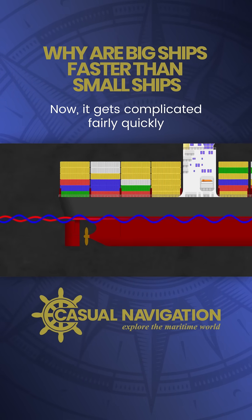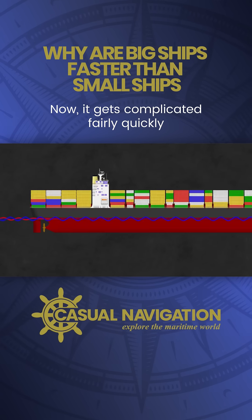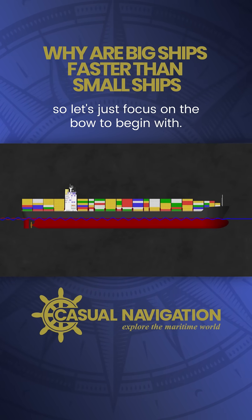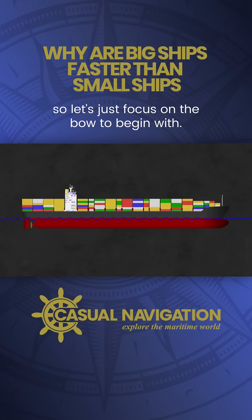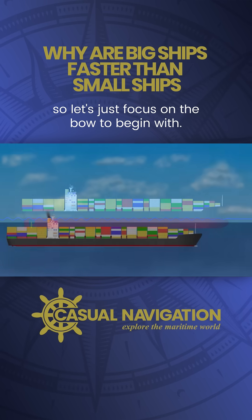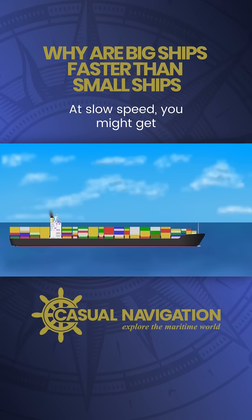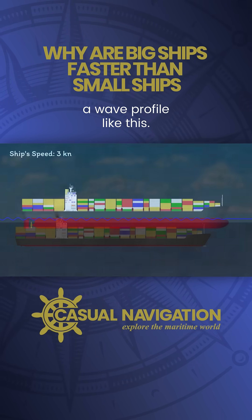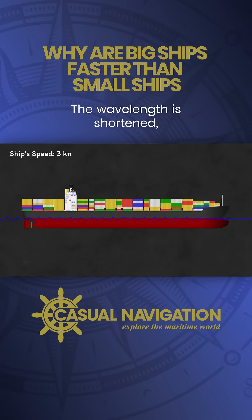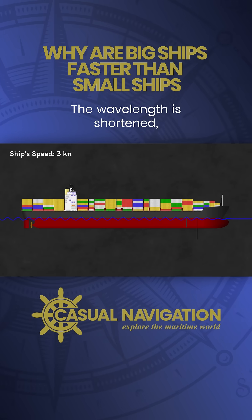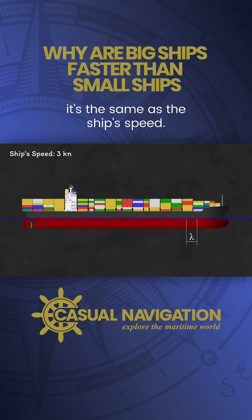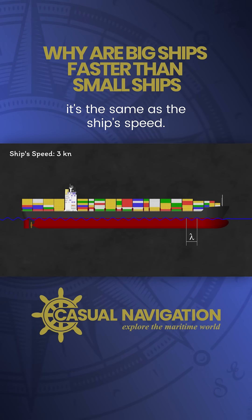Now, it gets complicated fairly quickly if we have two wave systems, so let's just focus on the bow to begin with. At slow speed, you might get a wave profile like this. The wavelength is short, and the wave speed is the same as the ship's speed.